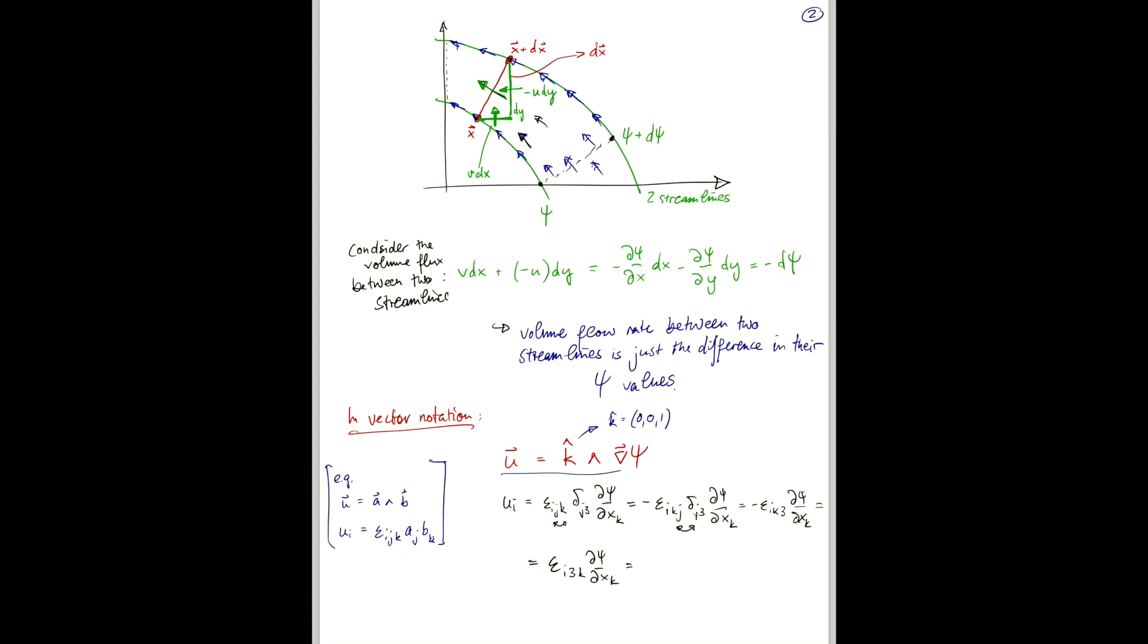So, now we have epsilon i3, 1 d psi dx, 1 plus epsilon i3, 2 d psi dx, 2. And that means u1 only leaves us the second term where we have epsilon 1, 3, 2 d psi dx, 2. And that picks up a minus sign, minus d psi dx, 2.